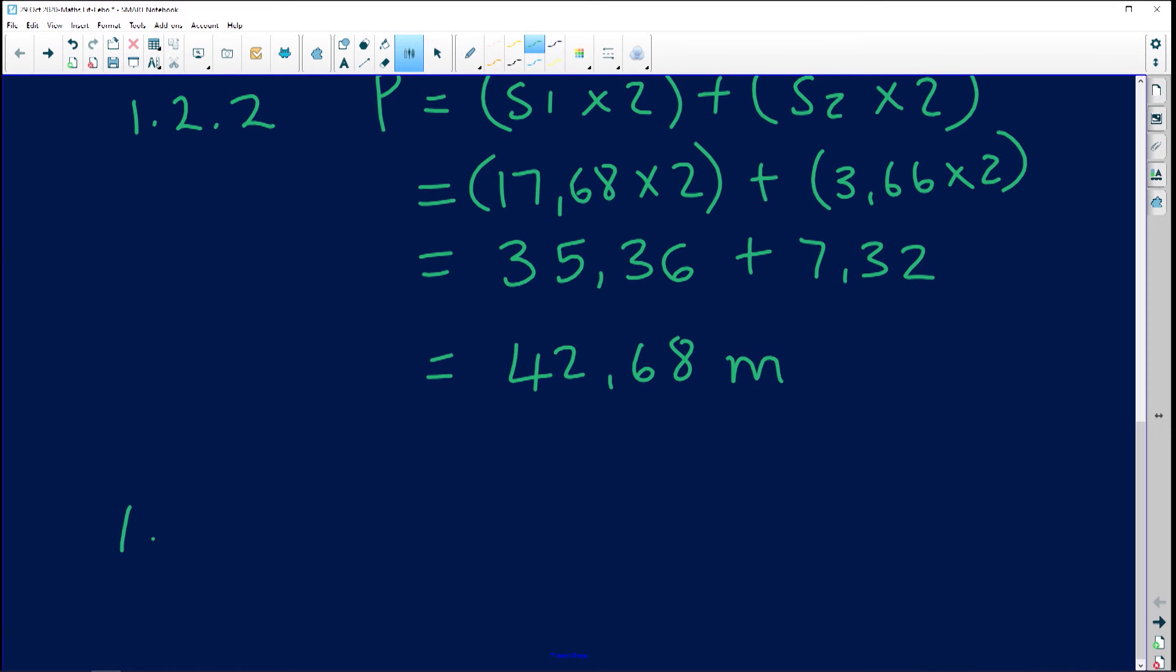And now it's going to be in meters and not meter square because this is just perimeter. Meter square would have been if we were calculating area. Meter cube would have been if we were calculating volume. So now we're only just adding the sides. So it's just going to be meter.